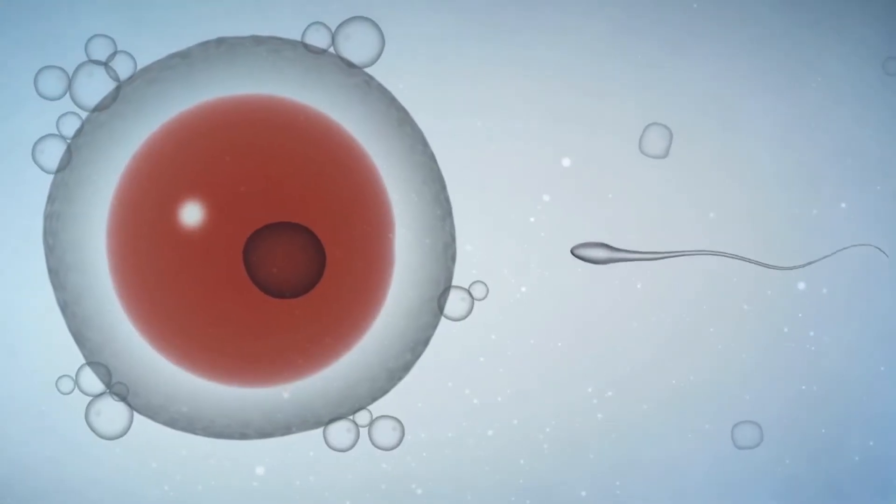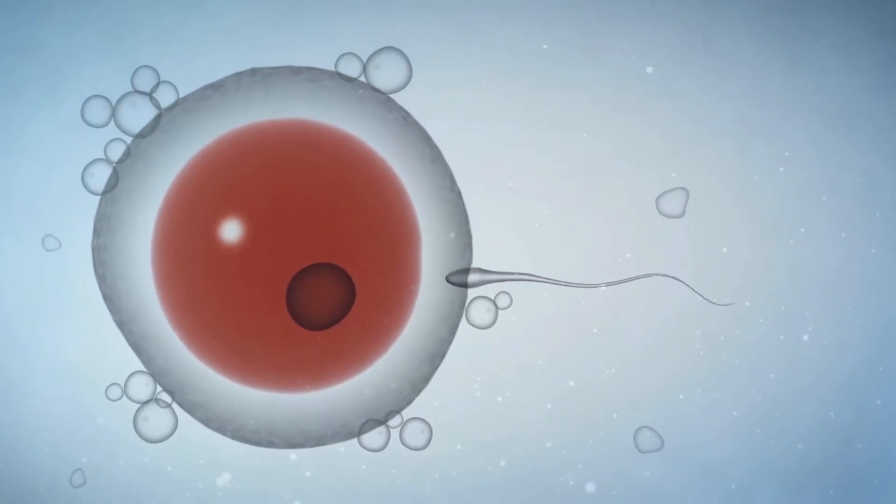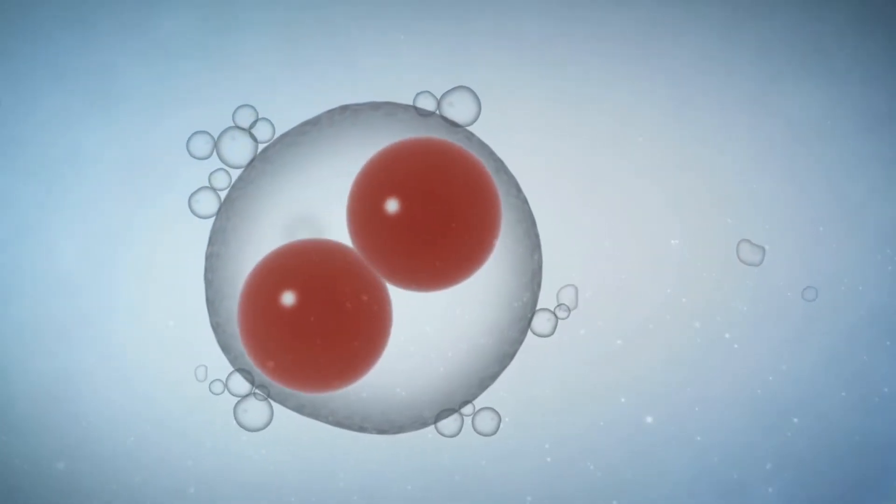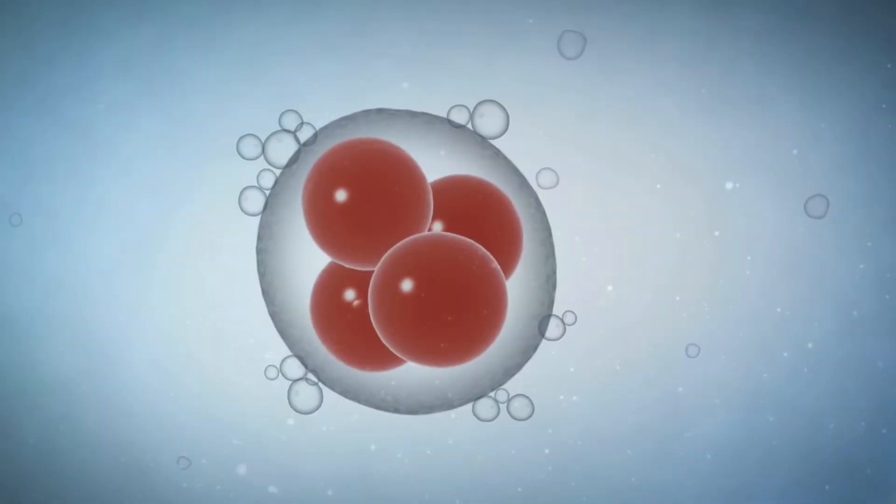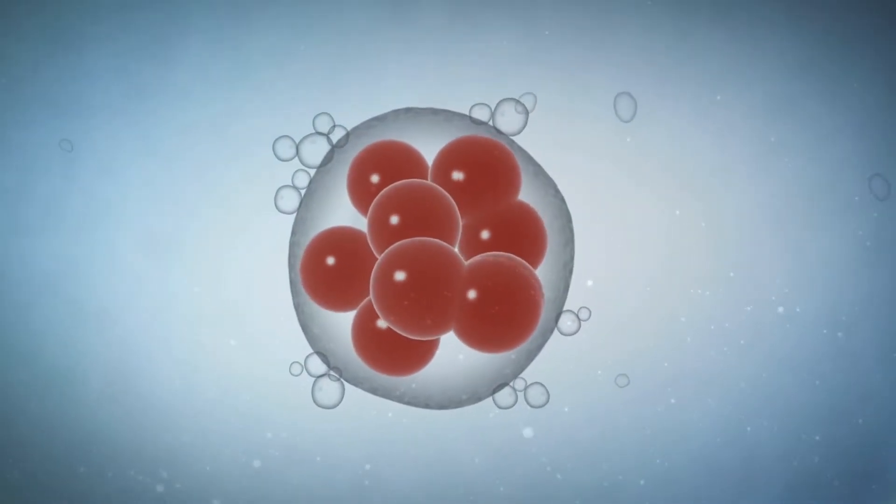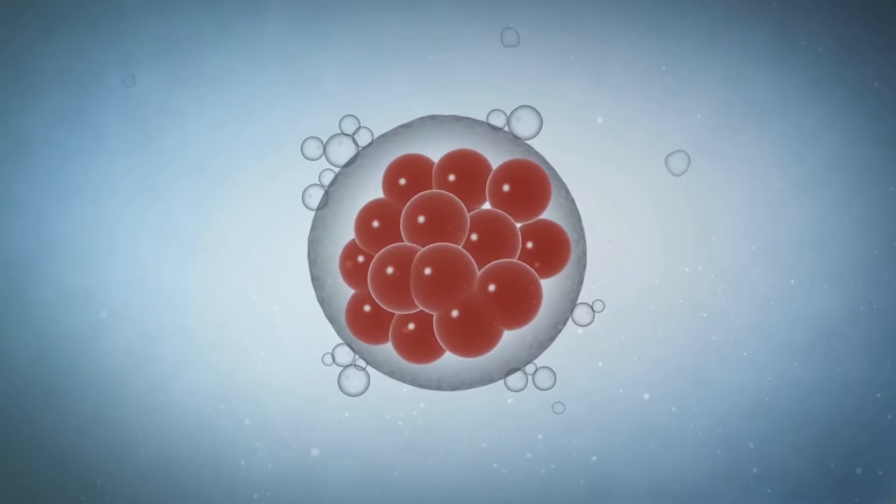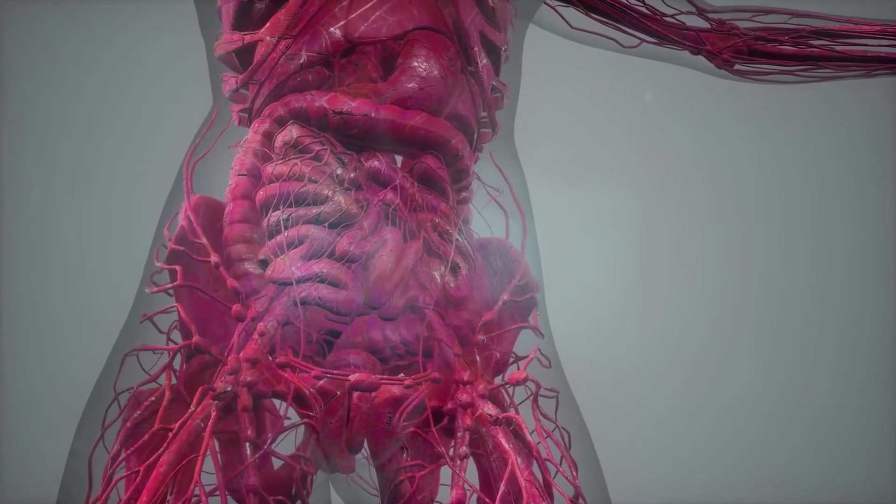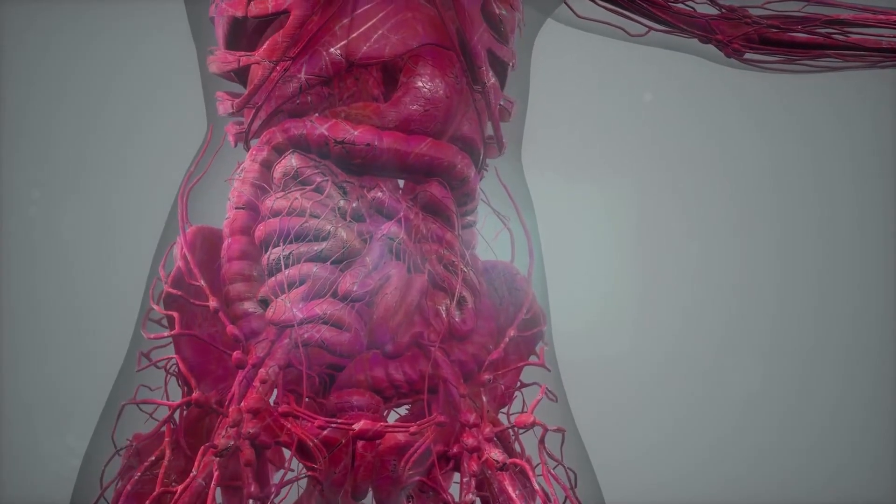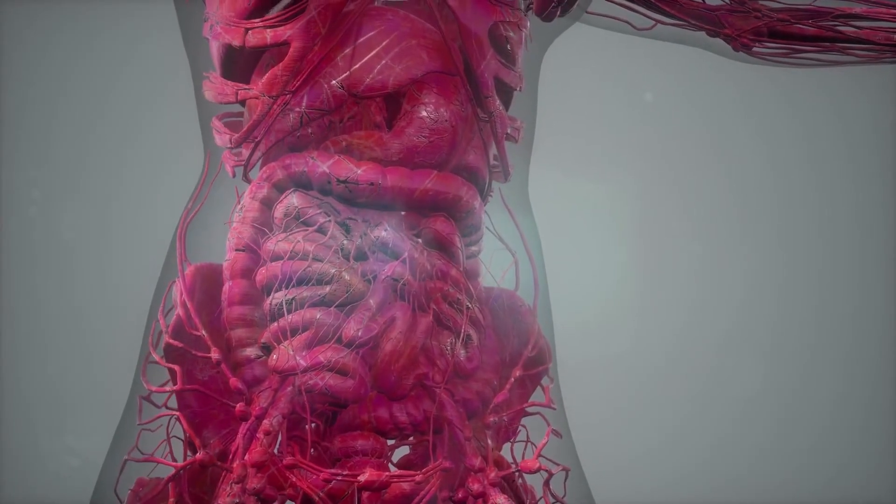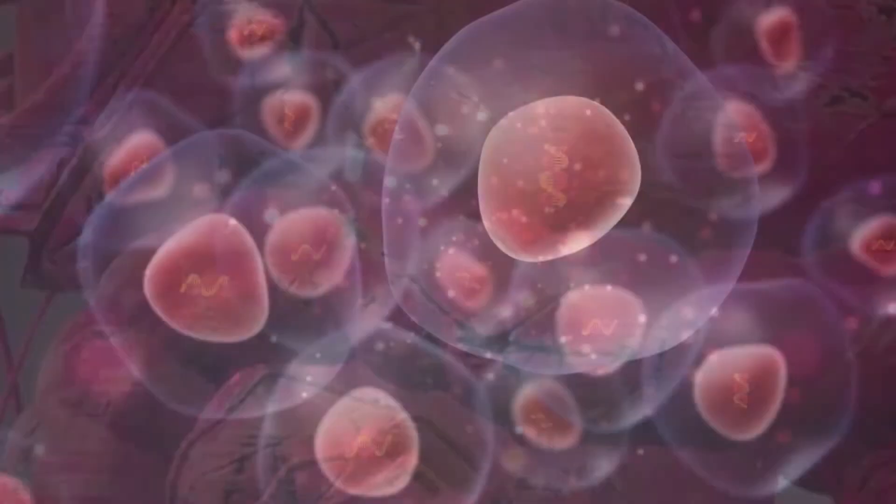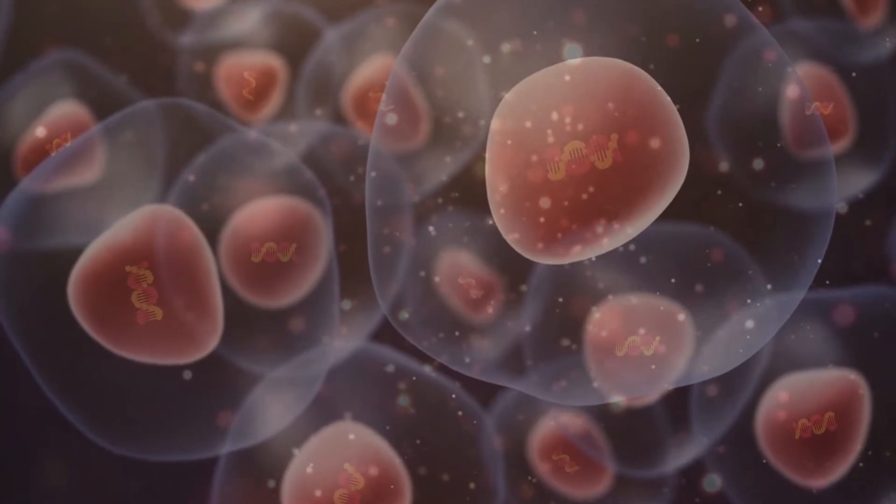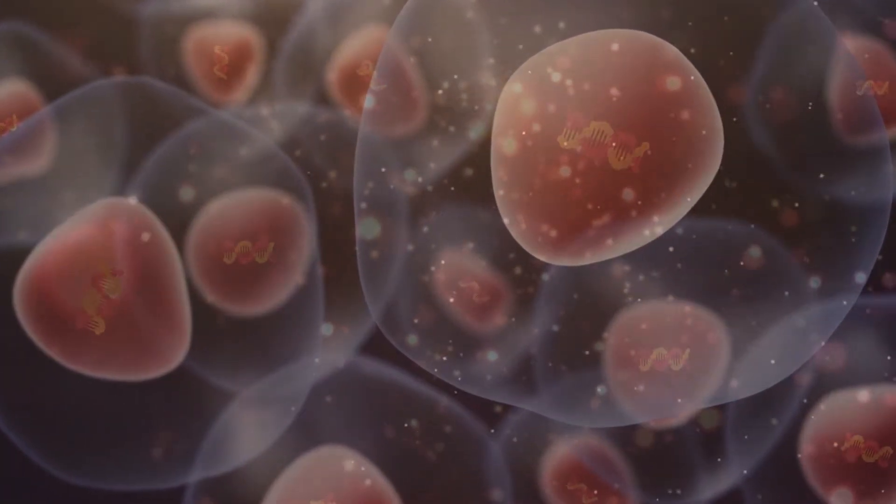From the moment of conception our cells are constantly dividing and changing and continue to do so throughout life. However, understanding the biology of aging is incredibly difficult. There are numerous factors involved in this complex process that are all interrelated. Aging is an inevitable time-dependent decline in physiological integrity and function of various organ systems caused by the accumulation of cellular damage. This drives a progressive loss of biological function and eventually impairs the function of the entire organism.